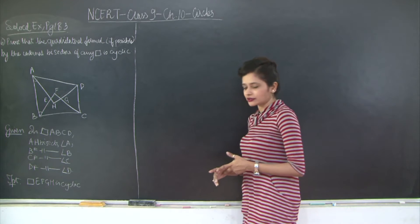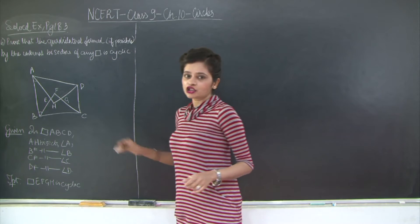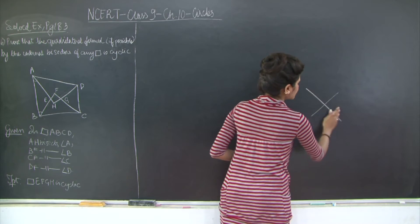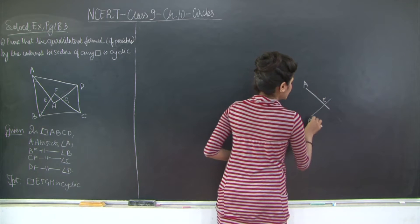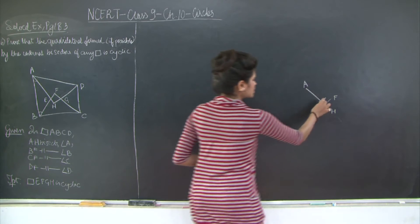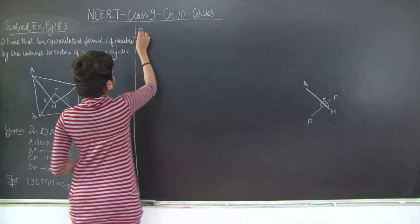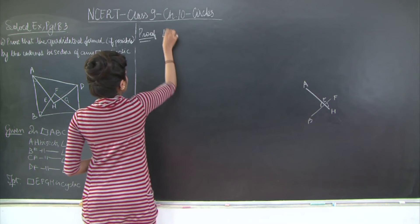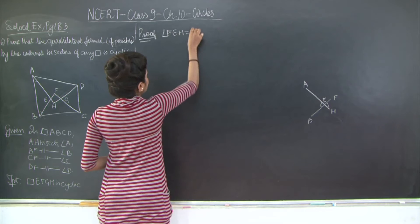Now, notice that angle AEB and angle FEH are equal to each other because they are vertically opposite angles. So we have points A, E, B and F, E, H — these two angles are vertically opposite and therefore equal. Let's write this down: angle AEB equals angle FEH because they are vertically opposite angles.